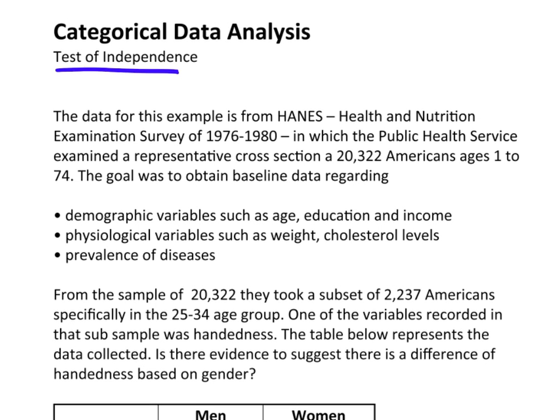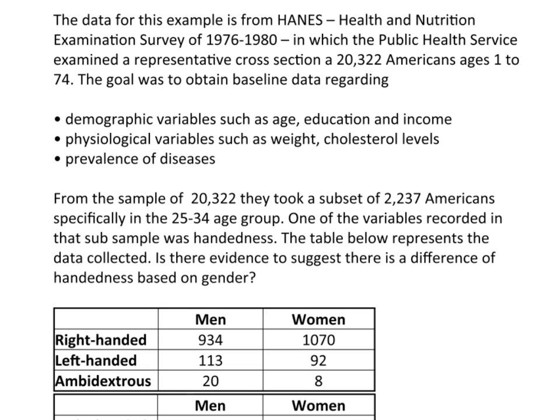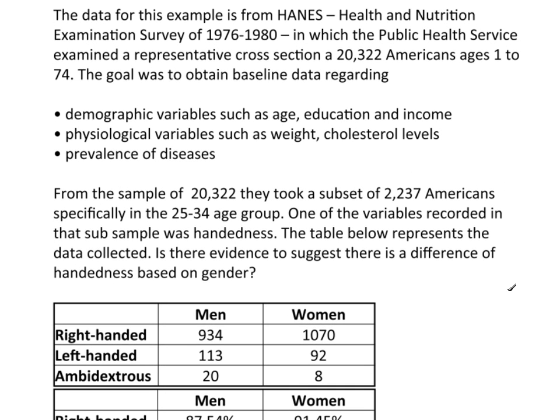From the sample of 20,000, it took a subset of 2,237 Americans, specifically in the 25 to 34 age group. One of the variables recorded in that subsample was handedness — right-handed, left-handed, or ambidextrous. The table below represents the data collected.